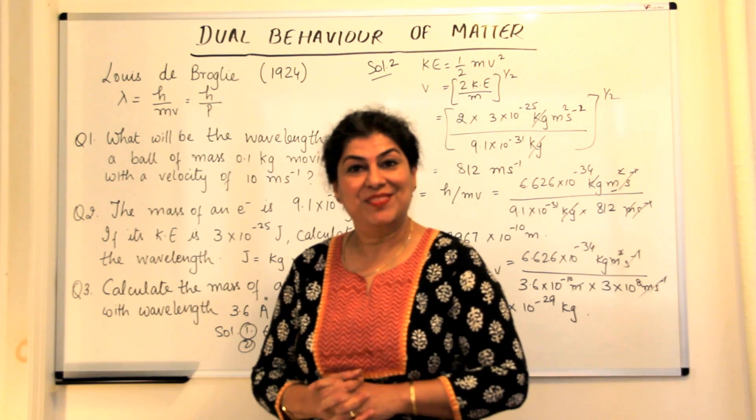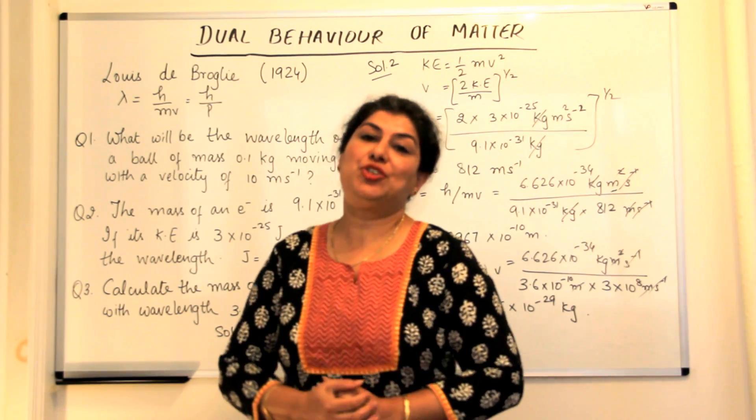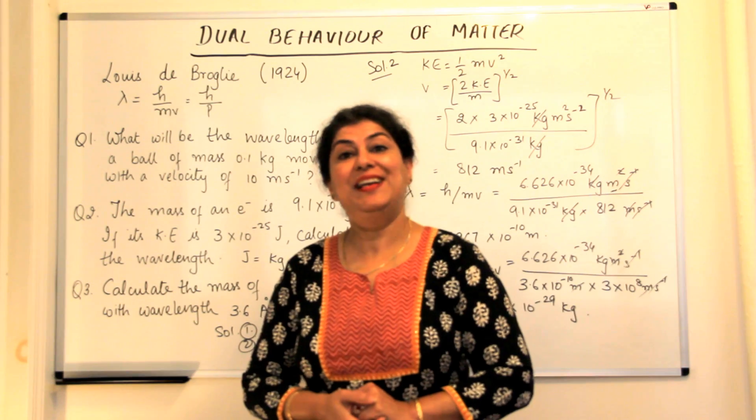So de Broglie, he made sure or he made it clear to us that both matter and electromagnetic radiations have dual-like nature. So this was another step towards the quantum mechanical model of an atom.